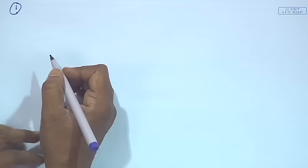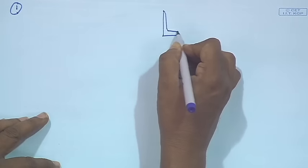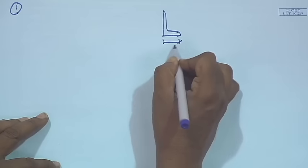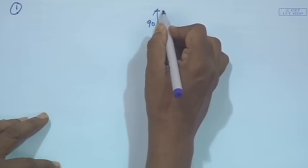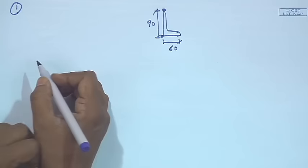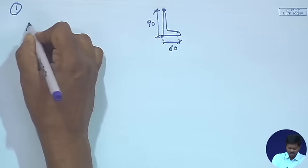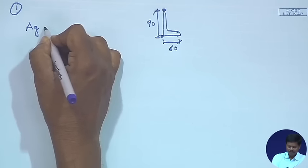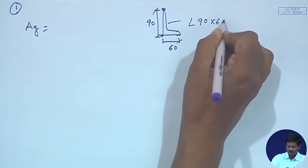We will come to the first case: if the longer leg is connected — that is, the 90 mm leg. We have to find out the geometrical properties of the angle section, like the gross area of the angle Ag, for an angle section of size 90 by 60 by 6.